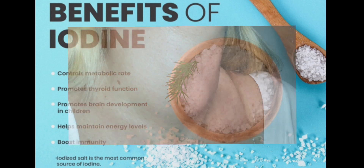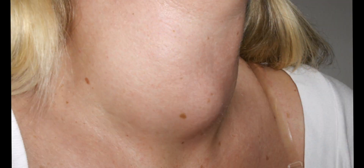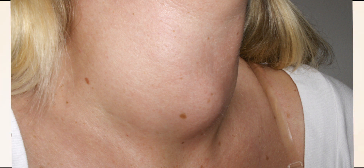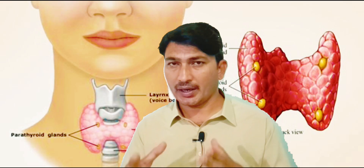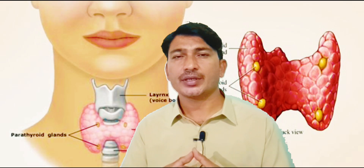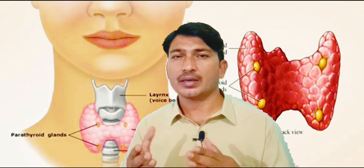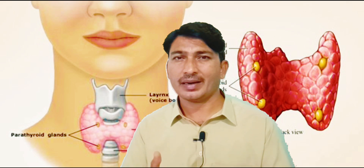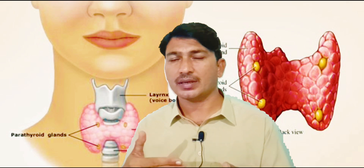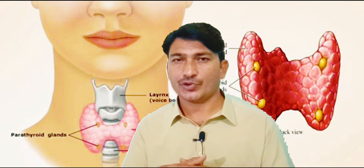The thyroid gland then gets enlarged and weaker in size — this condition is called goiter, which is also dangerous. In abnormal conditions, the hormone may be released in lesser or greater quantities.